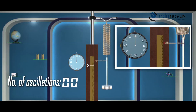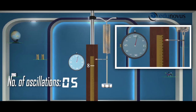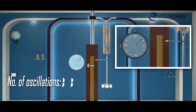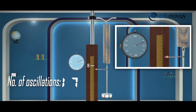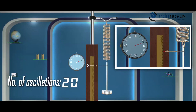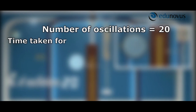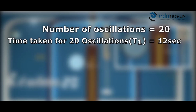Now pull the slotted weight a bit downwards and leave it. The weight begins to move up and down and oscillates vertically. We need to measure the time taken for 20 oscillations. The time taken for 20 oscillations is 12 seconds. Note it down as t1 in the observation table.